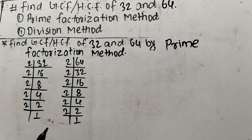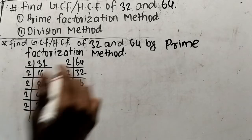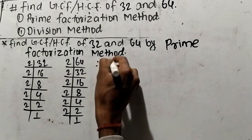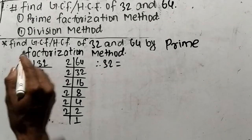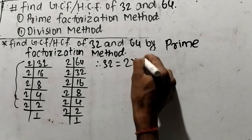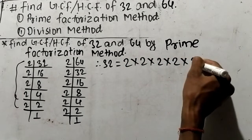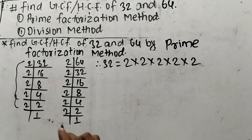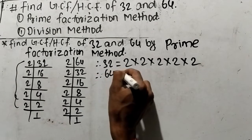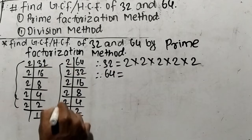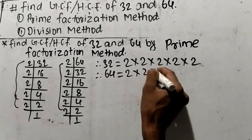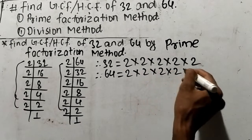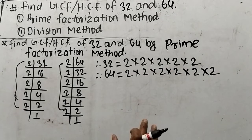So as you look here, we have found out the prime factors of 32 and 64. From these prime factors, we can write 32 as 2 multiplied 5 times (2^5), and 64 as 2 multiplied 6 times (2^6).